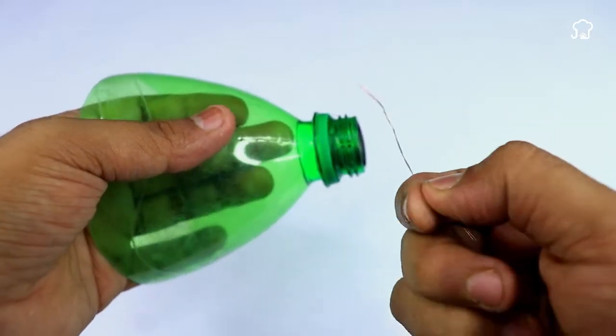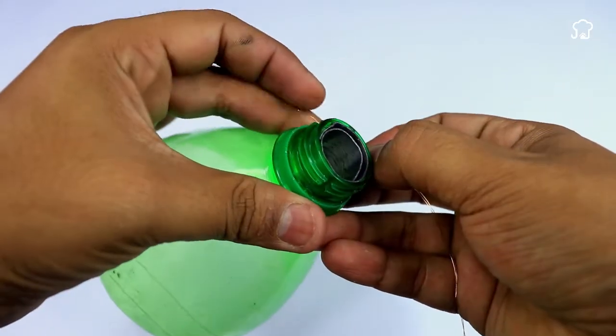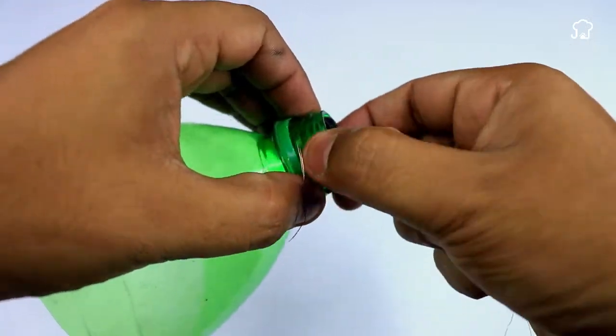Surround the nozzle of the bottle with aluminum wire. This wire will help stabilize the structure and improve the conductivity of the sound.